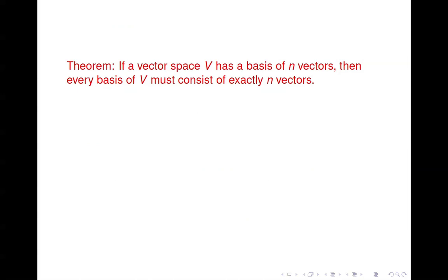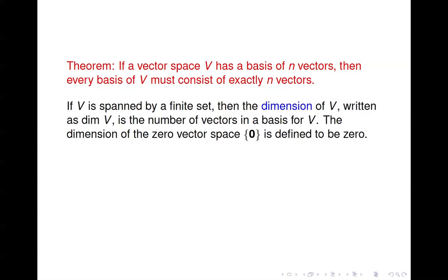Our theorem says that if a vector space has a basis of n vectors, then every basis for that space must have exactly n vectors. This number of vectors in a basis for a vector space is called the dimension of that vector space. We have a special case where the vector space has only the zero element — we call that the zero vector space — and since there's no basis for that set, we define its dimension to be zero.